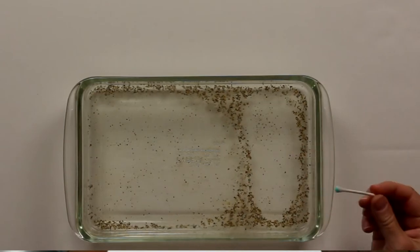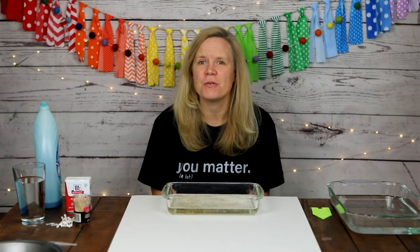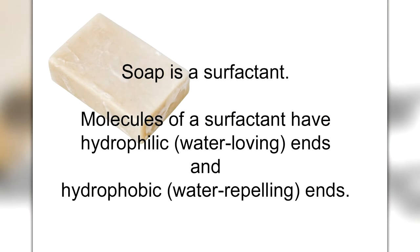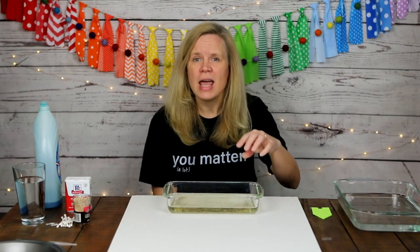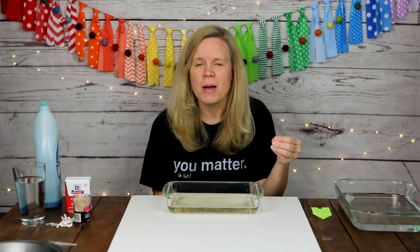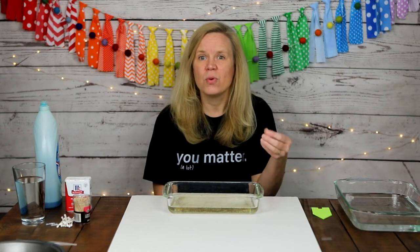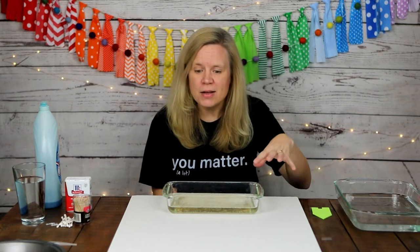The reason that happened is because soap is a surfactant. The molecules of a surfactant have hydrophilic, or water-loving, ends and hydrophobic, or water-repelling, ends. When the soap goes into the water, all of the hydrophilic ends align with the water and all of the hydrophobic pieces align with the air above. This creates a new surface film of soap which interrupts the cohesive forces between the water molecules — and that's why the pepper was repelled away from it.